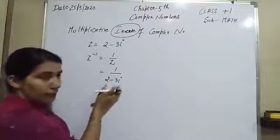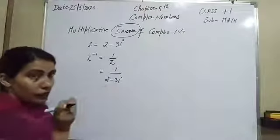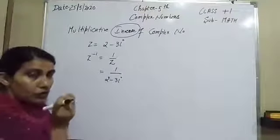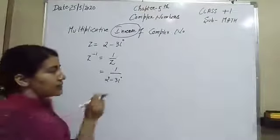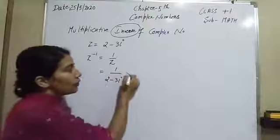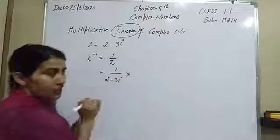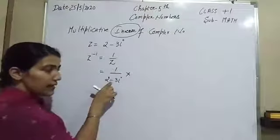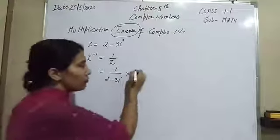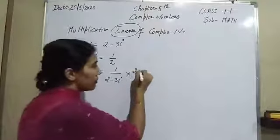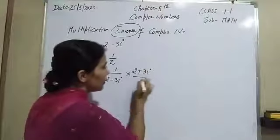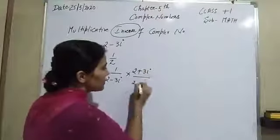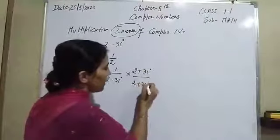Whenever we have a complex number in the form of a denominator, you just have to do its rationalizing. Here is a negative symbol, so you have to rationalize by 2 plus 3 eta.